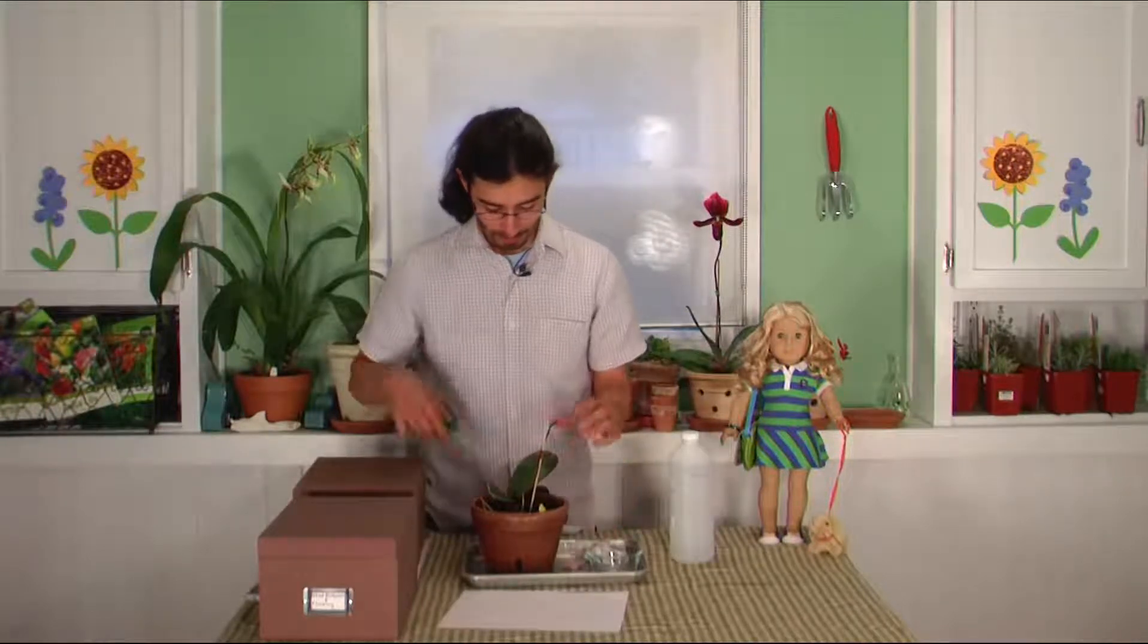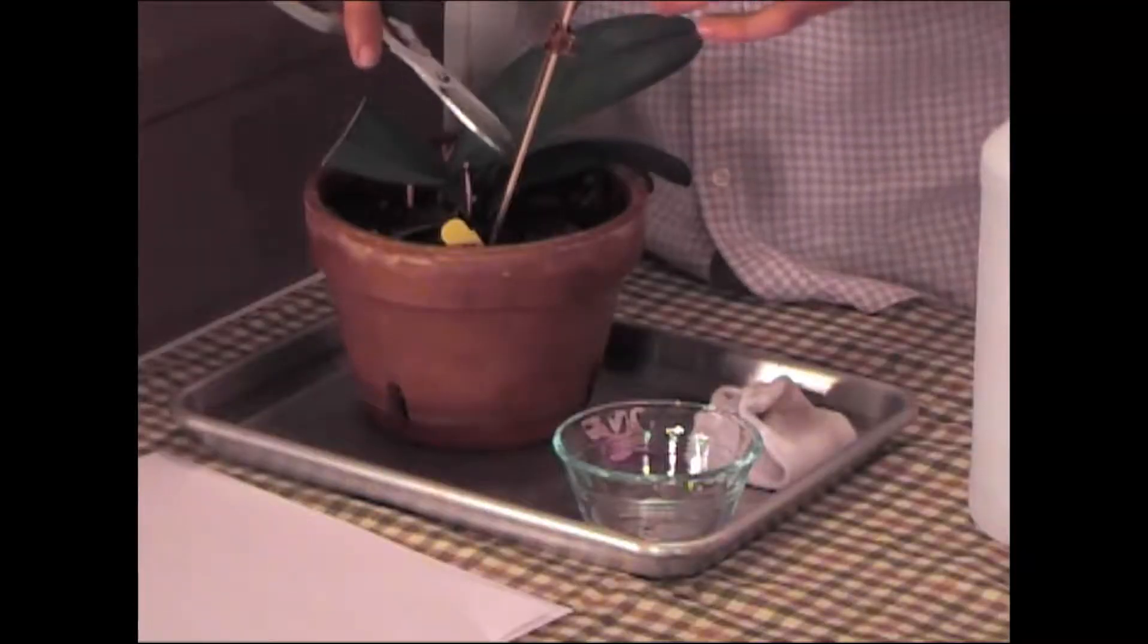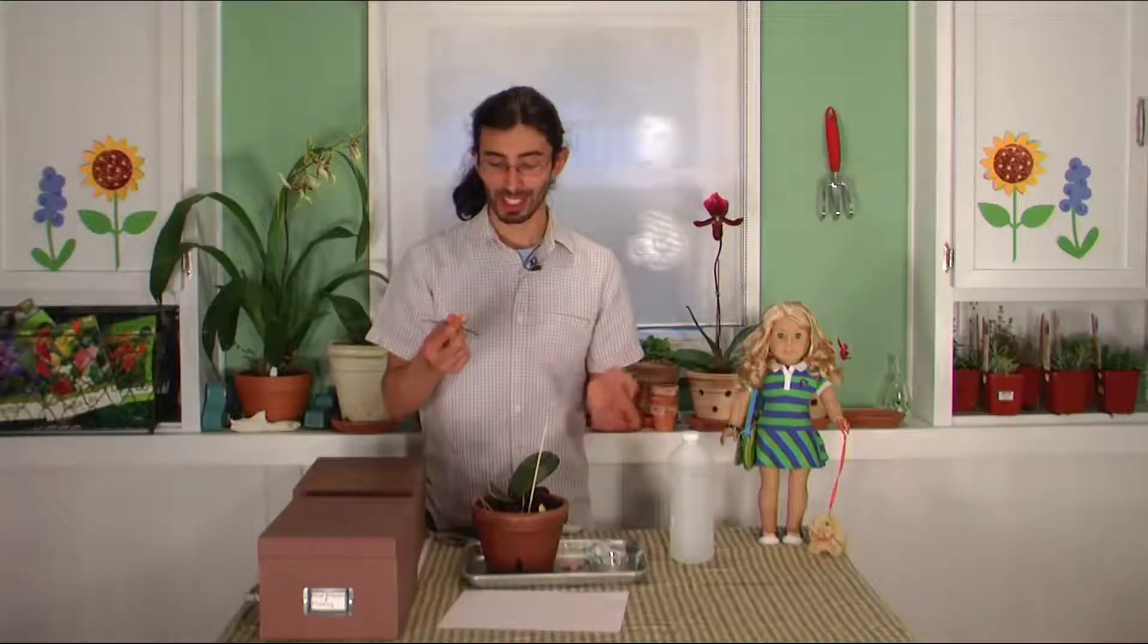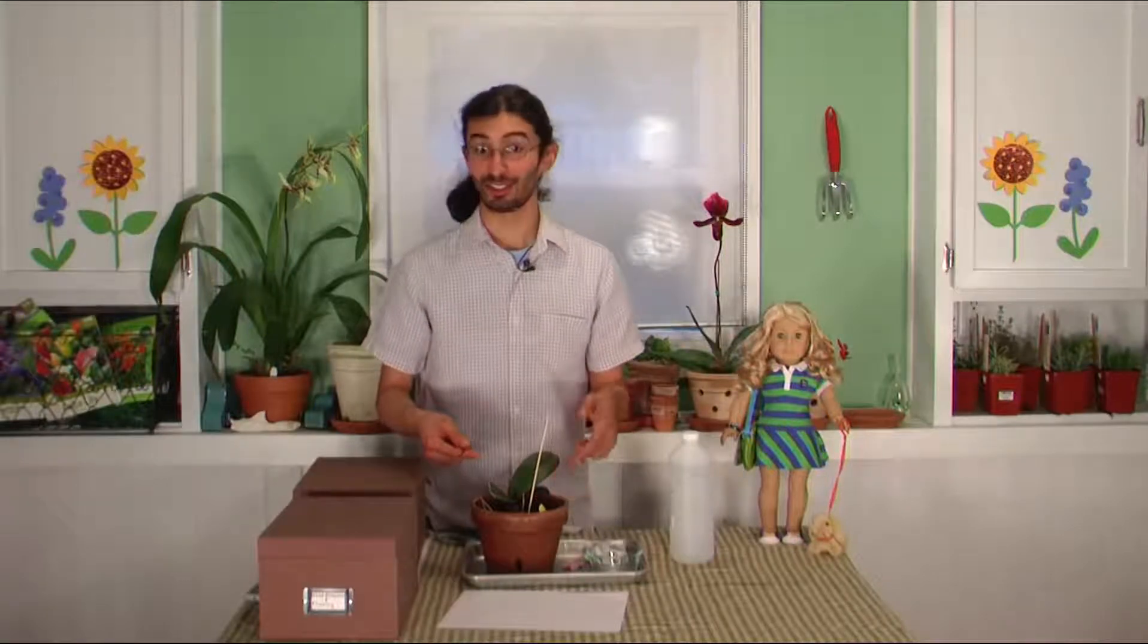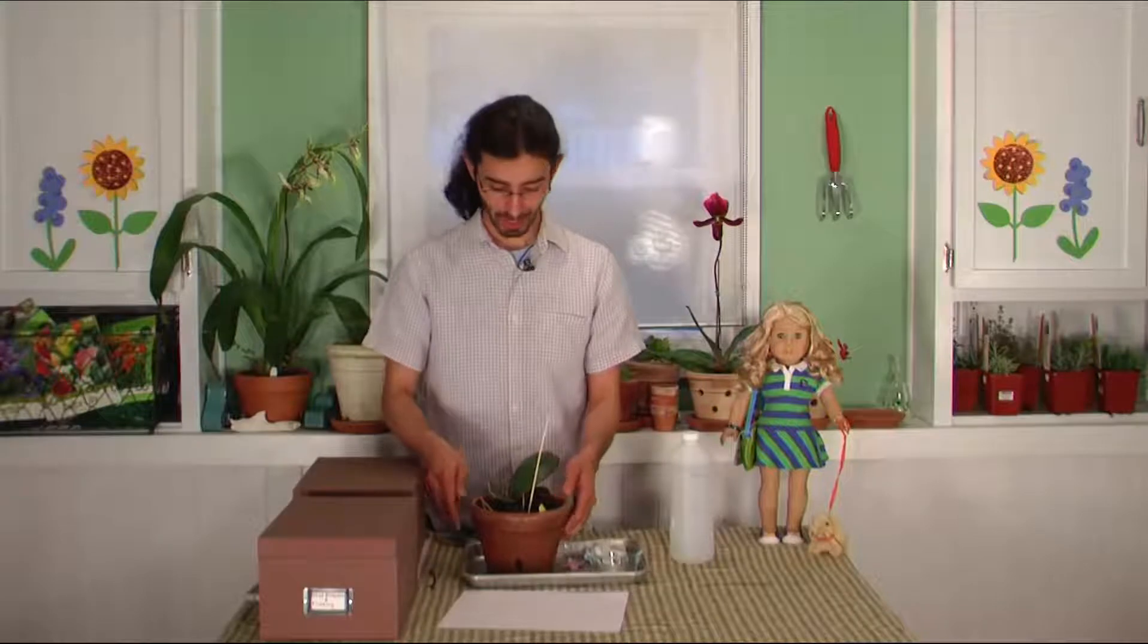And then the next thing you want to do is just cut off the spike right above one of these nodes. Now why do you cut it above one of the nodes? Because a new spike can form out of one of the nodes if you're lucky. So I just try and make sure and always cut above one of the nodes.